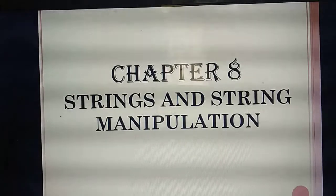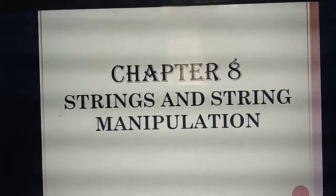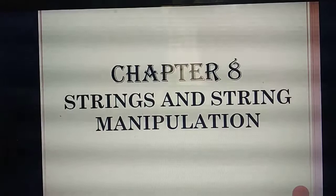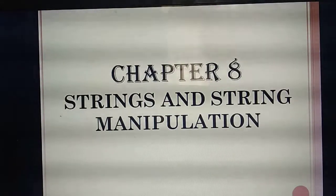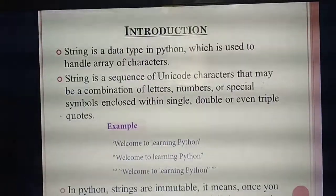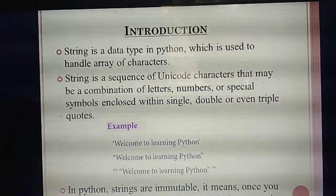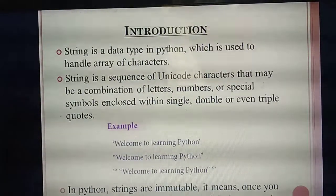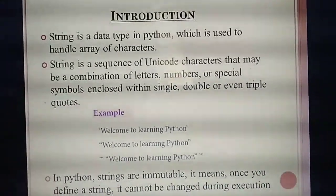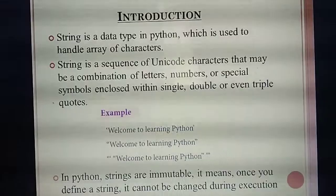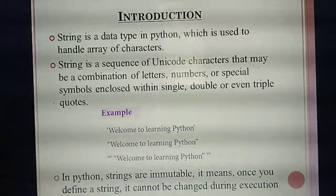For example, a, b, c, d separately we call characters. A word like 'computer' — that we call a string. A string is a collection of characters. In Python, string is also one of the data types.